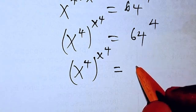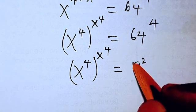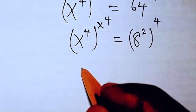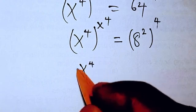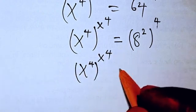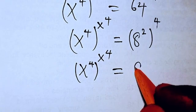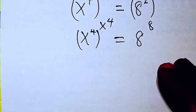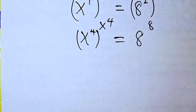Now 64 can be written as 8^2 to the power of 4. So we have (x^4)^(x^4) = (8^2)^4. Here we can see x^4 raised to itself, and 8 raised to itself.